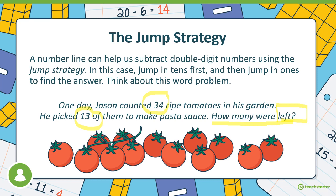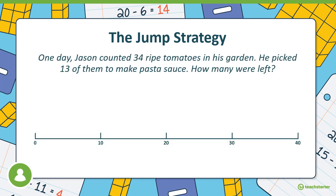How are we going to solve this word problem using the jump strategy? Let's take a look. First we go back by 10 — 34 minus 10 — and then we take three small steps to get to our designated number, so we've taken away 13 in total. So 34 minus 13 equals 21.